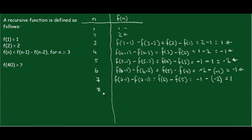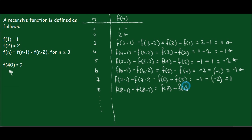We're going to compute a few more of these terms to see if there's a pattern, because we really don't want to go all the way to 40. Let's do f(8): f(8-1) minus f(8-2) gives us f(7) minus f(6). f(7) is 1, and f(6) is negative 1, so 1 plus 1 gives us 2.